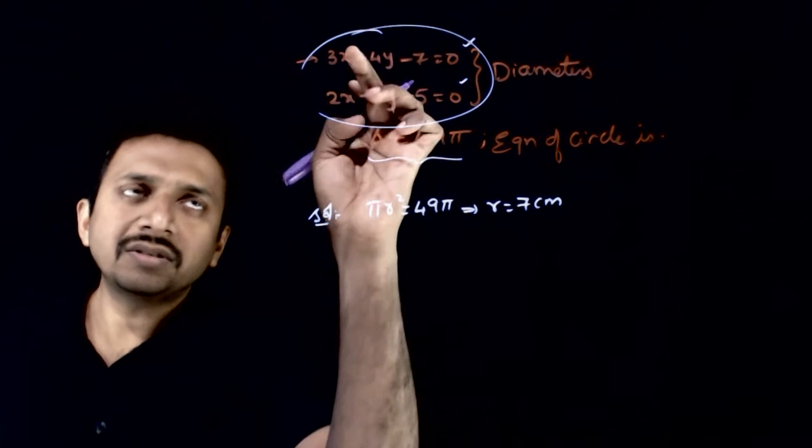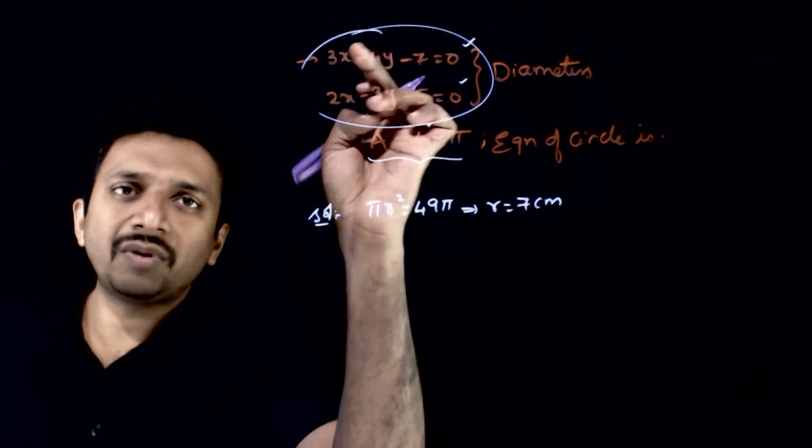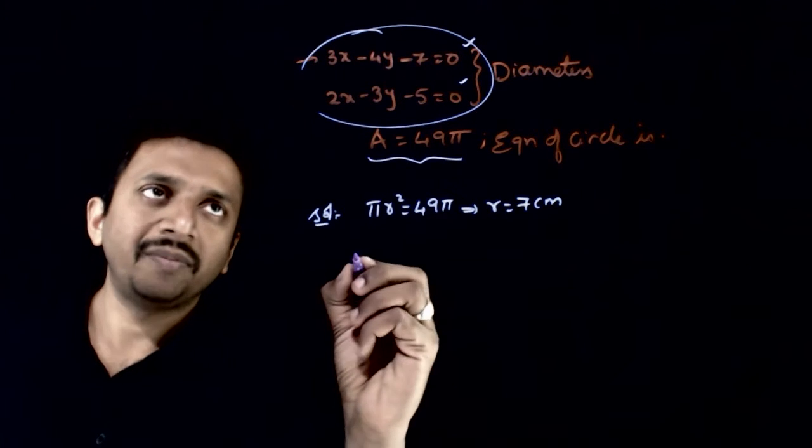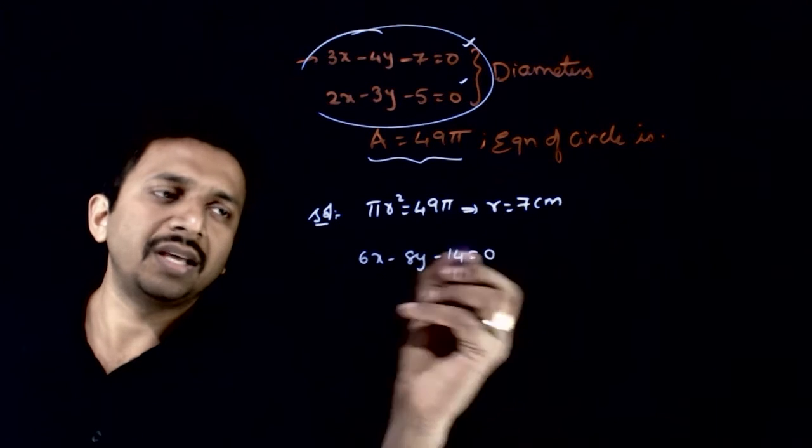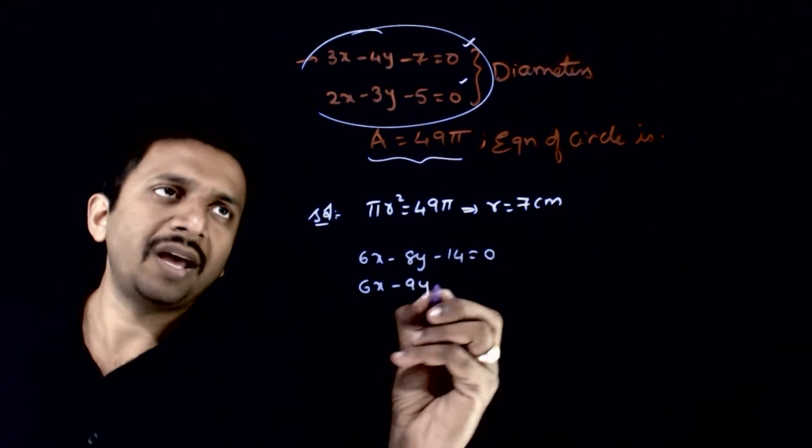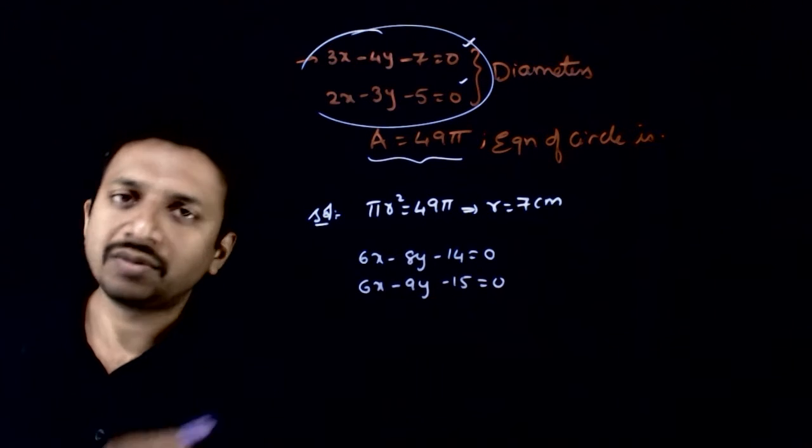Let us solve these two equations. Let me multiply the first equation with 2 and the second equation with 3. So, 6x - 8y - 14 = 0, and 6x - 9y - 15 = 0.